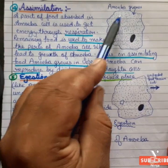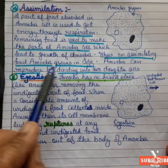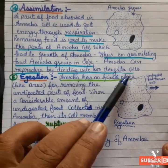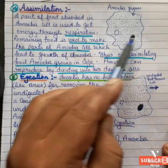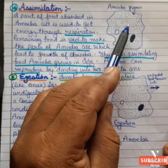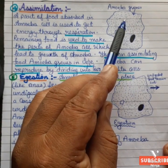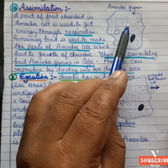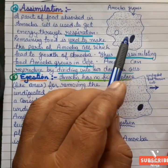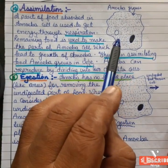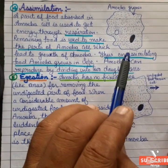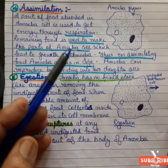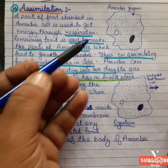By assimilating food, amoeba grows in size and can reproduce by dividing into two daughter cells. In summary, the first part of absorbed food is used for respiration and the second part is used for cell growth, helping amoeba increase in size.